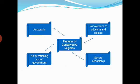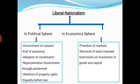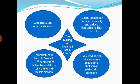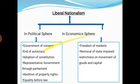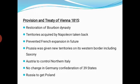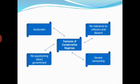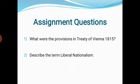Today we learned about the making of nationalism in Europe, liberal nationalism, conservatism, the Treaty of Vienna 1815 and its provisions, and the features of conservatism. Some assignment questions based on today's content are given for you to write answers. The remaining part of this lesson will be covered in the next online session. Thank you very much.